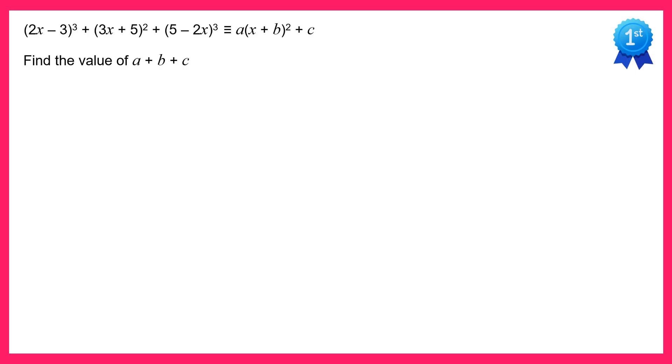Hello and welcome to the solution video to spicy question number 40. For this question we've got lots of brackets. The first one is 2x minus 3 all cubed, so that means we've got 2x minus 3 times by itself and times by itself one more time. If you expand all of these brackets you'll end up with this.